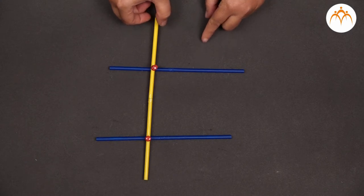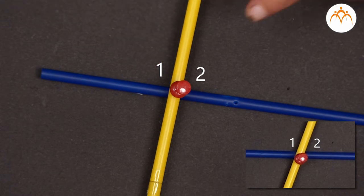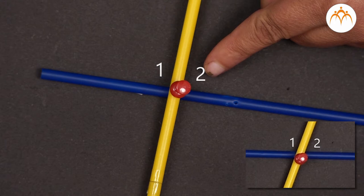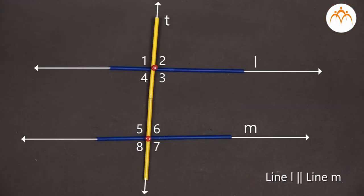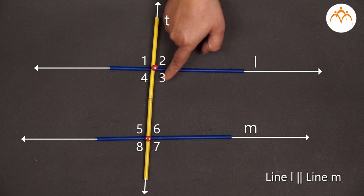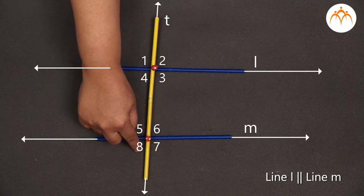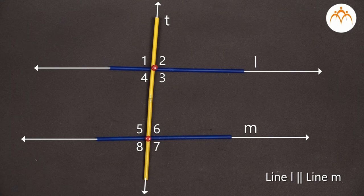Let us see what happens to the measures of these angles if we change the position of the transversal T. We can see that the measure of angle 1 becomes lesser whereas the measure of angle 2 becomes more. Similarly, we can see the change in the measures of the remaining angles — angles 3, 4, 5, 6, 7, and 8. So when a transversal intersects two parallel lines, eight angles are formed and the measure of each angle changes as per the change in the position of the transversal.